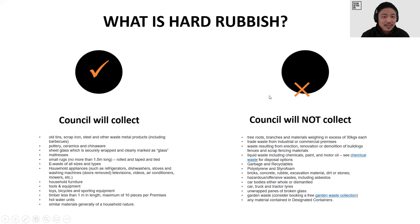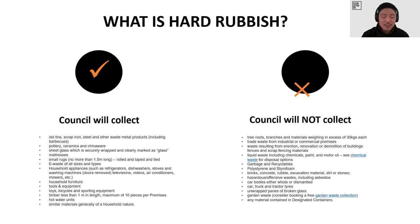What is hard rubbish? This covers what council will collect and what they won't collect — you can look this up online. One council's list says you can't dump tree roots, branches, or large building materials on the side of the road. You also can't dump commercial or construction materials. One thing most people don't know is that you can't dump polystyrene or styrofoam on the side of the road for hard rubbish collection, nor whole or dismantled car bodies.